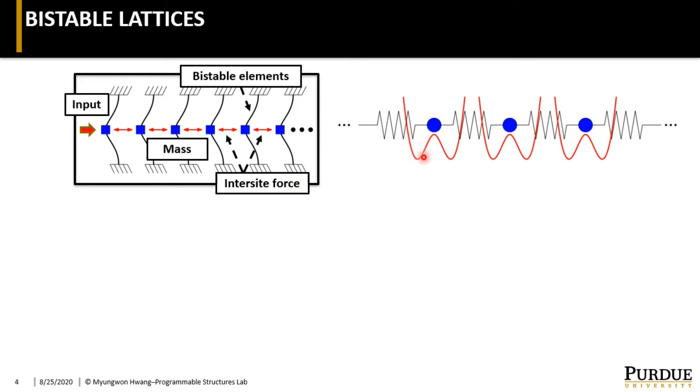Bistability means having two stable states that can be described by this kind of double-well potential. And the key constructional feature is that the bistable nonlinearity has to be applied at the on-site members, meaning that the force field is unaffected by the motion of the masses.